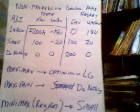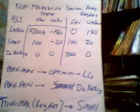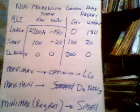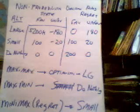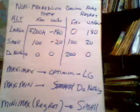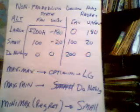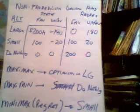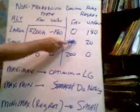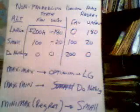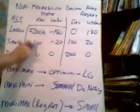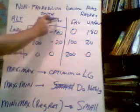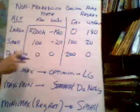The next rule is my personal favorite — it's called the mini-max regret rule. Before you apply it, you have to come up with the regret matrix, also known as the opportunity cost matrix. To construct the regret matrix, you look in the column of your payoff matrix associated with each state of nature.